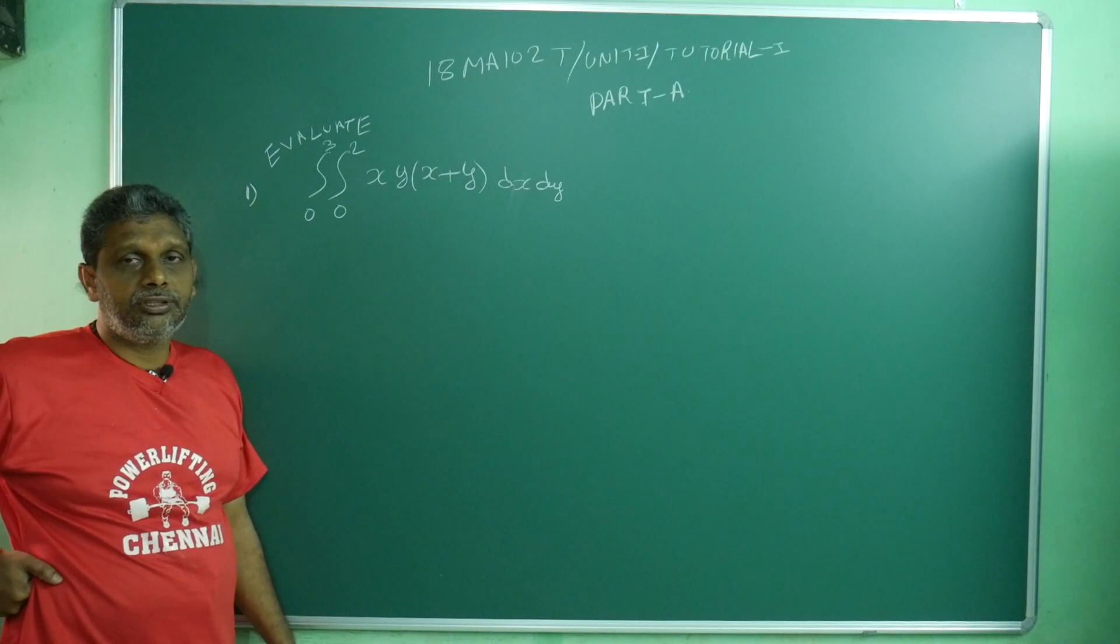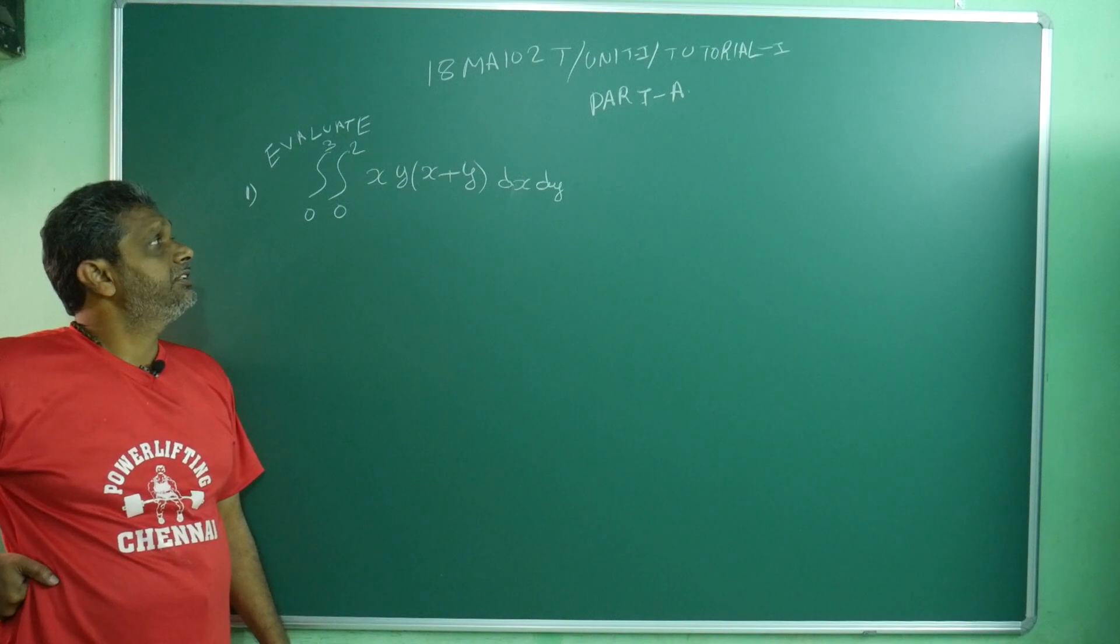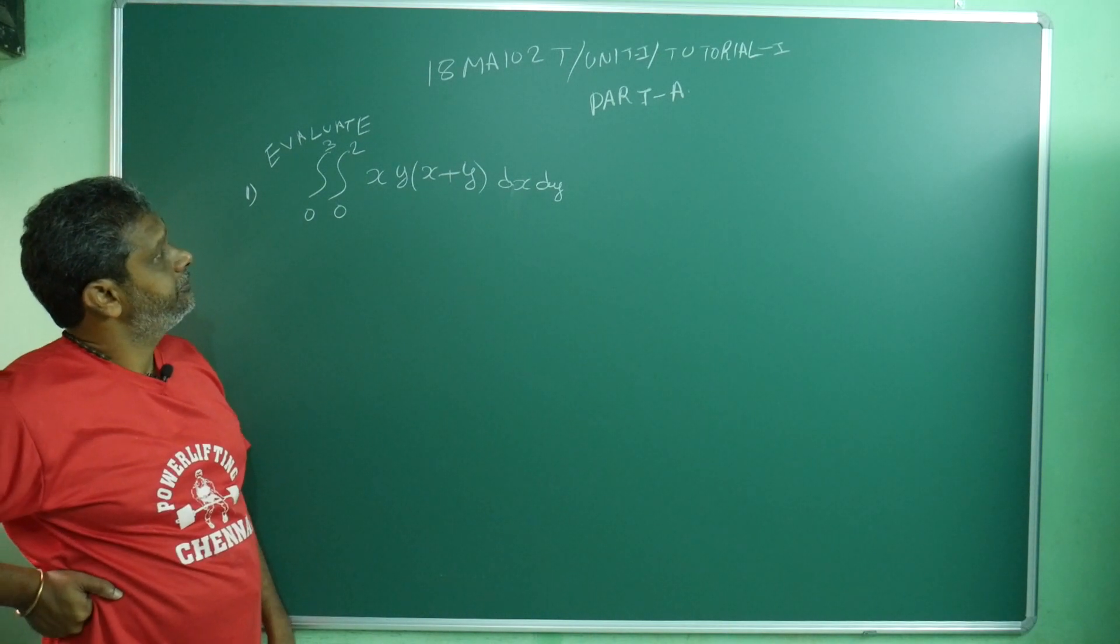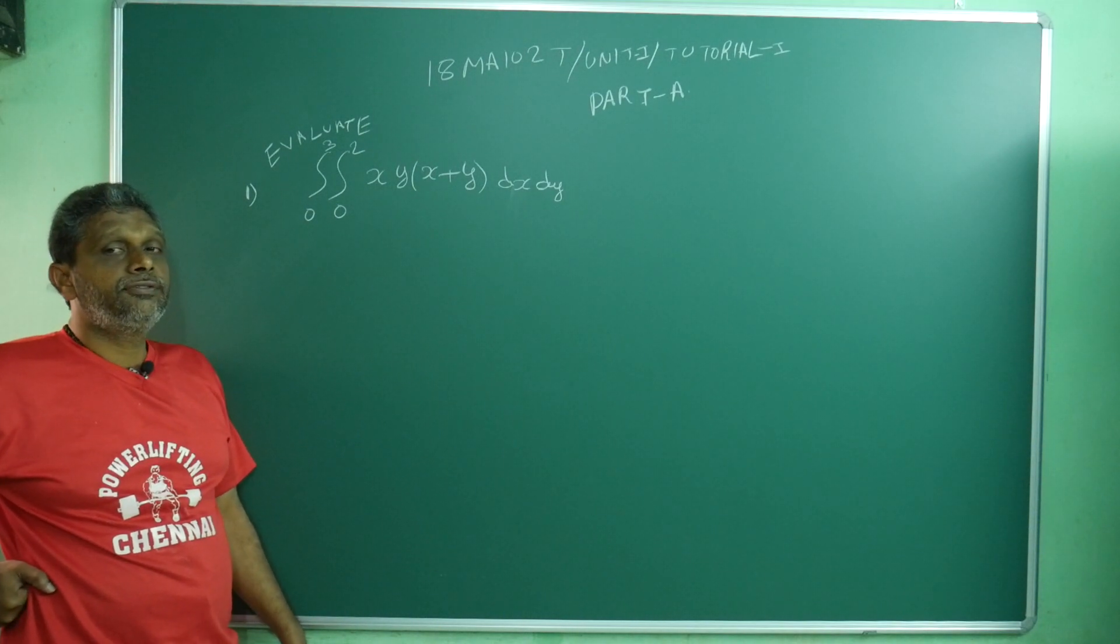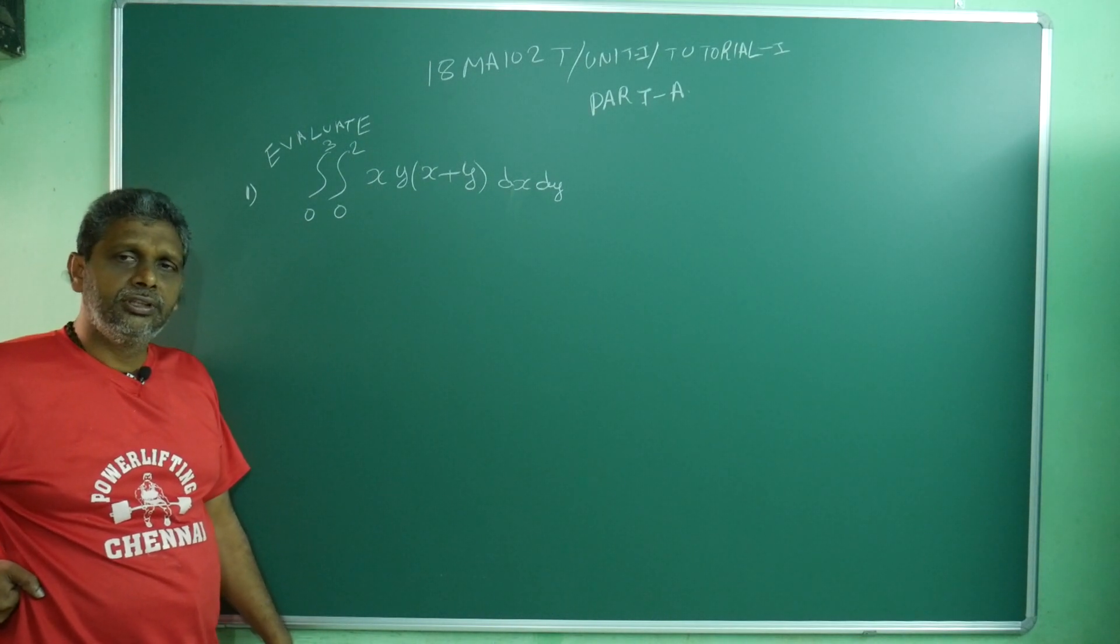See the first problem: evaluate integral running from 0 to 3, second integral running from 0 to 2, xy times (x plus y) dx dy. Here you see the beauty of the sum. Both are constants, both are constant means you can attack any variable you can take and attack, nothing will happen.